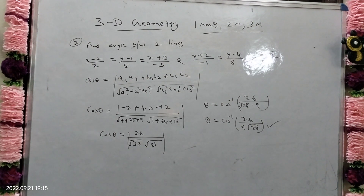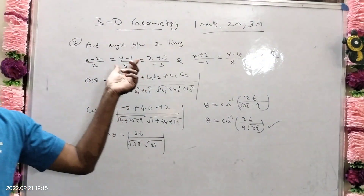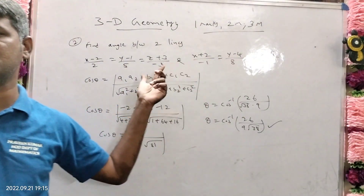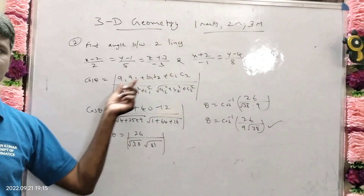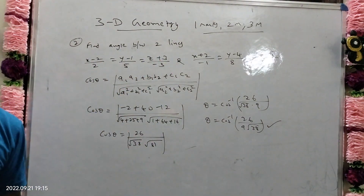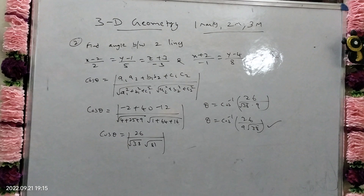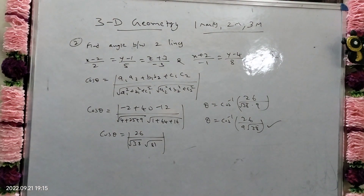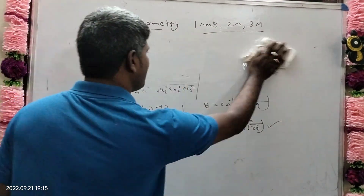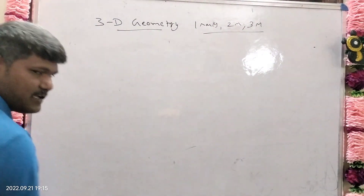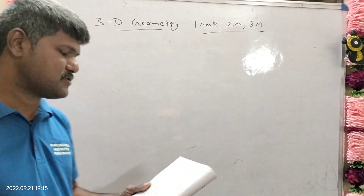Therefore θ = cos⁻¹(26 / 9√38). This is the answer. In the examination they will change the lines, but the direction ratios a₁, b₁, c₁ and a₂, b₂, c₂ are read from the denominators of the Cartesian form. You substitute into the formula and get the answer. Because of shortage of time I am explaining all the questions quickly; you can pause the video and write the answer.